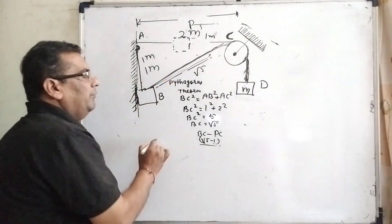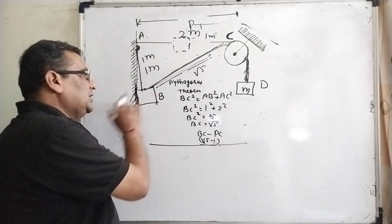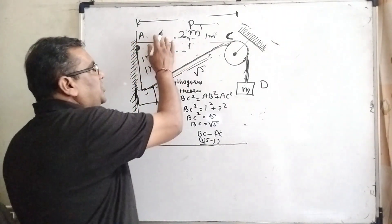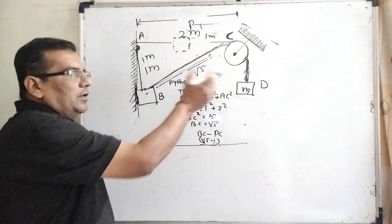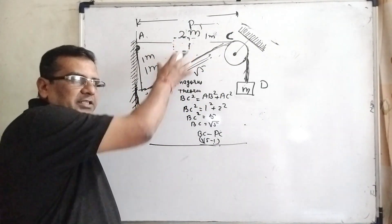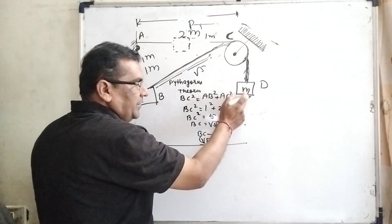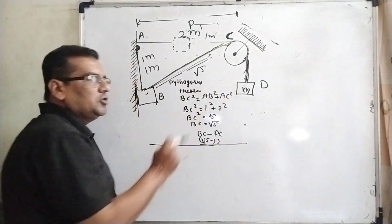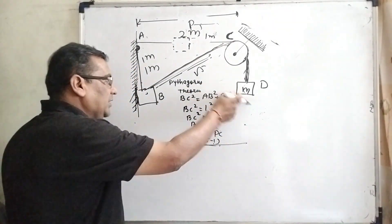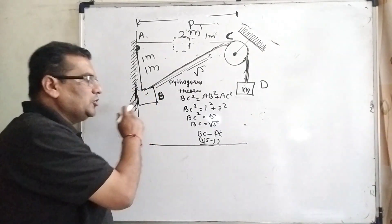Now we have applied the law of conservation of energy. When initially the block is here, its potential energy is equal to the kinetic energy and potential energy at the final position. Here the potential energy decreases and the kinetic energy of the small block increases, its potential energy also increases.